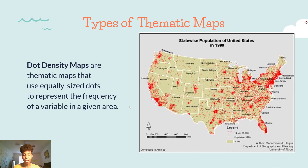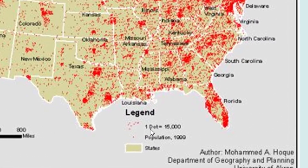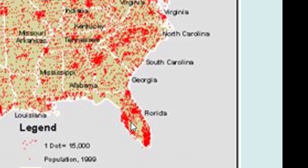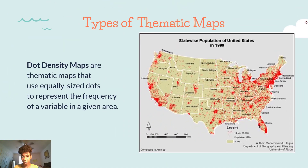Dot density maps are maps that have equal-size dots to represent a frequency. The more dots, the more of that particular frequency. In this case, one dot equals 15,000 people in population. Imagine how many people are in Florida in these areas — 15,000 people per dot! The more dots clustered or concentrated in a certain area, the greater the population. So what can we say about this map — are there more people in the Midwest or in the Eastern Seaboard?